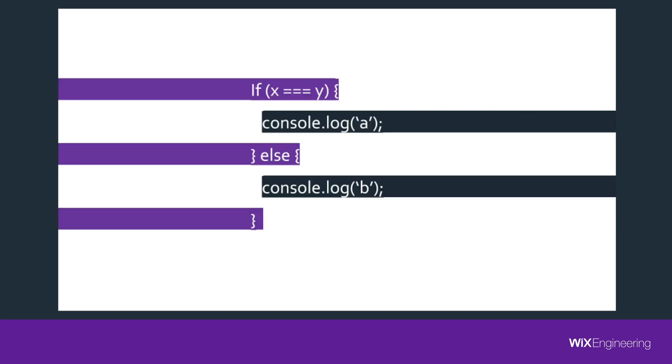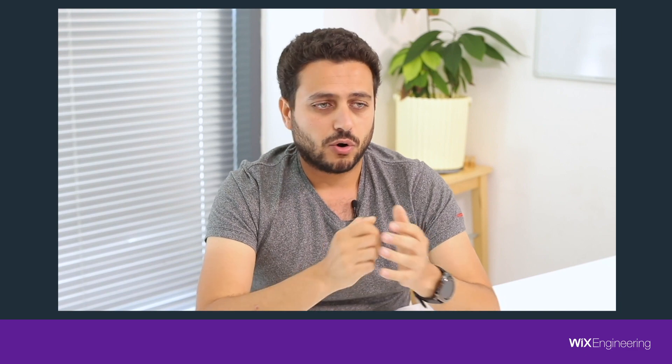First, let's understand a couple of terms. Every application has its own business logic and technical details. The business logic is the logic of our application — if the user does this, then do that. The technical details are the tools that help us implement the business logic. For example, if you want to record some data, we can use MySQL or SQLite; or if you want to know the user's location, we can use GPS or Wi-Fi. All of those are technical details that help fulfill the business logic.